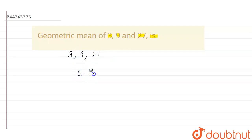So geometric mean of three numbers is cube root of multiplication of these three numbers. So it will be cube root of 3 into 9 into 27.